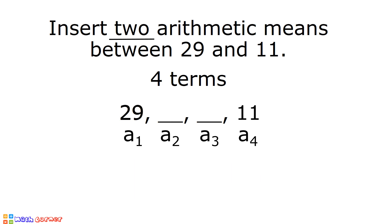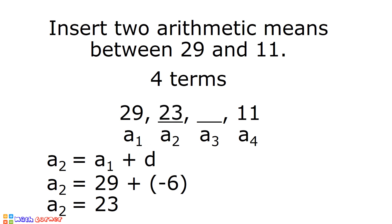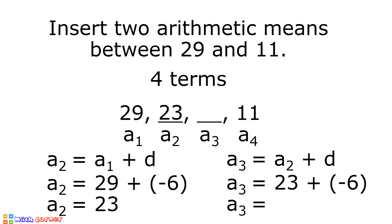Let us now solve for a2. a2 is equal to a1 plus the common difference: 29 plus negative 6, and the answer is 23. That is our second term or a2. a3 is equal to a2 plus d: 23 plus negative 6 is equal to 17. Our third term is 17. The two arithmetic means between 29 and 11 are 23 and 17.